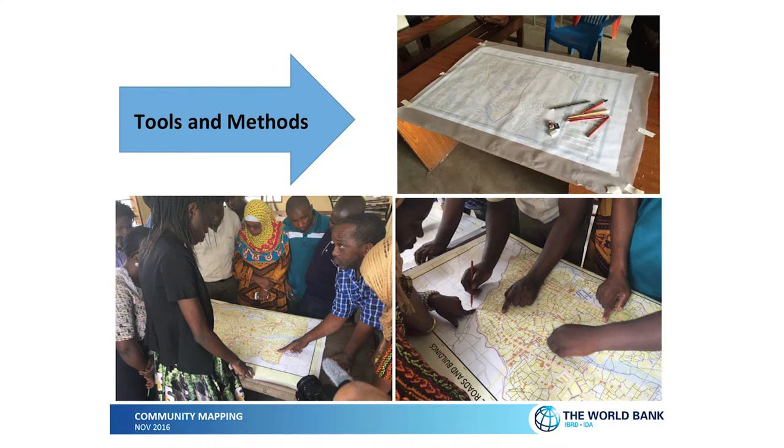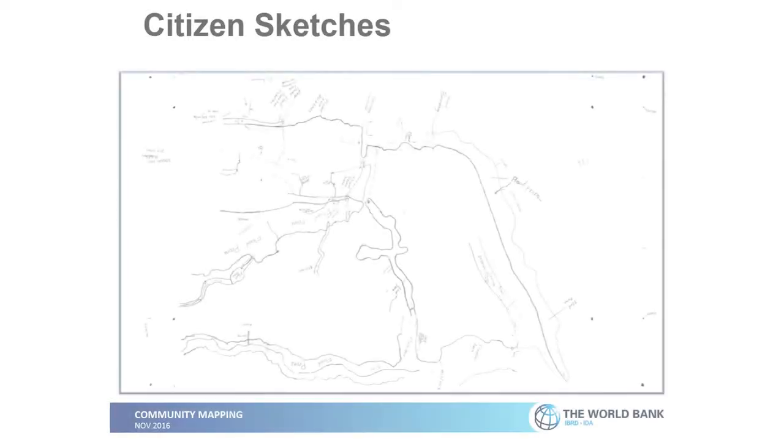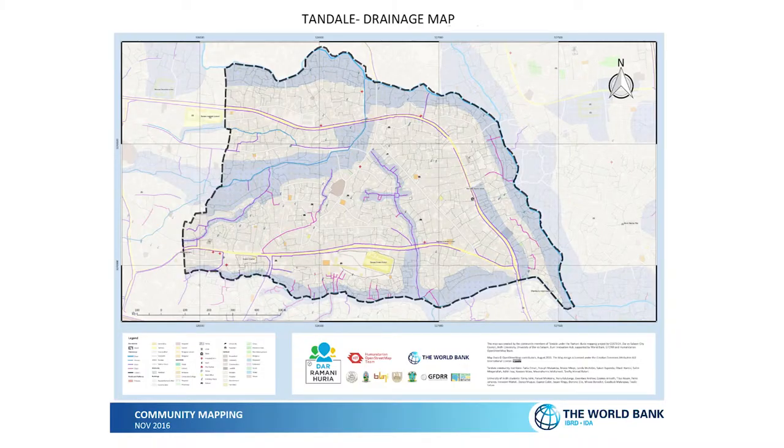We use pencil. We have the updated base map and tracing paper to map the flood-prone areas. During our mapping process, we carry out community forums with the communities, ward officers, and sub-ward officers. They sketch the flood-prone areas on the tracing paper which is laid on top of the base map. After tracing the flood-prone areas, the information gathered is then digitized and uploaded to OpenStreetMap.